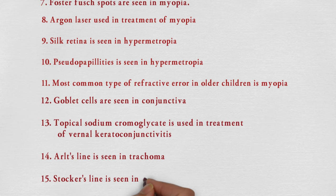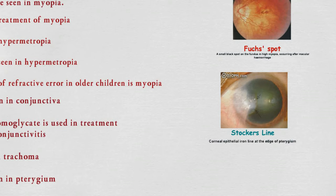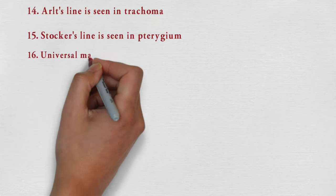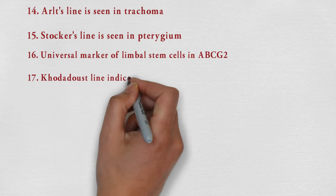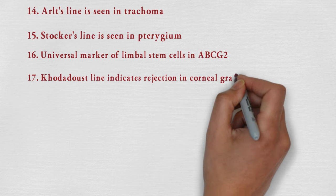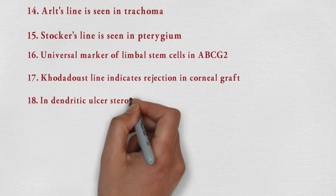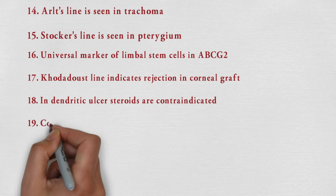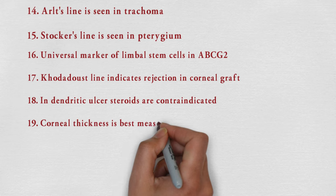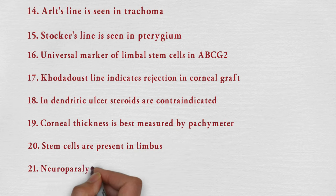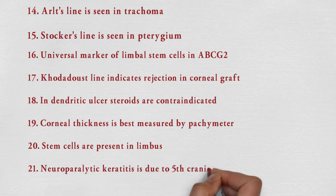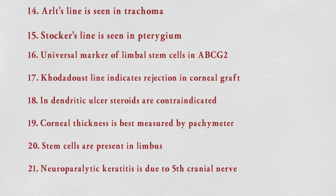Arlt's line is seen in trachoma, while Stocker's line is seen in pterygium — it is a corneal epithelial iron line at the edge of pterygium. Universal marker of limbal stem cells is ABCG2. Khodadoust line indicates rejection in corneal graft. In dendritic ulcer, steroids are contraindicated. Corneal thickness is best measured by pachymeter. Stem cells are present in limbus. Neuroparalytic keratitis is due to the fifth cranial nerve.